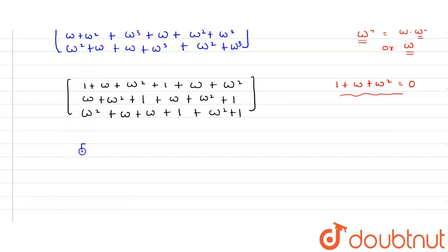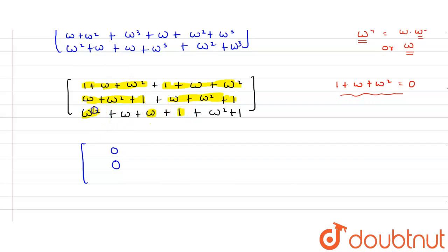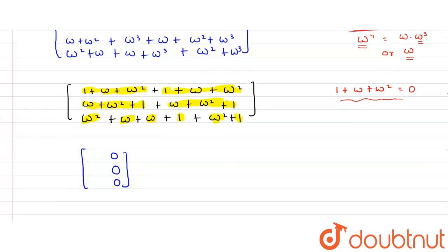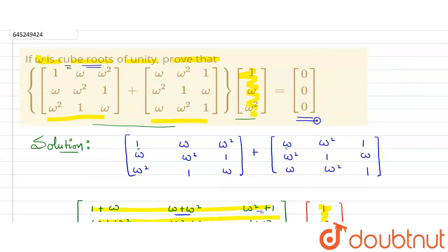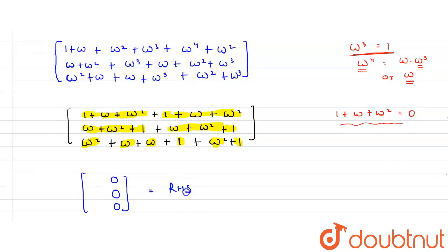Simplifying further: one plus omega plus omega squared equals zero, and again one plus omega plus omega squared equals zero — so I write zero for the first row. In the second row, one plus omega plus omega squared again gives zero, and once more gives zero. In the last row, one, omega, and omega squared give zero; and omega squared, one, and omega also give zero. So we have concluded this is the zero matrix, which is what we needed to prove — hence proved.